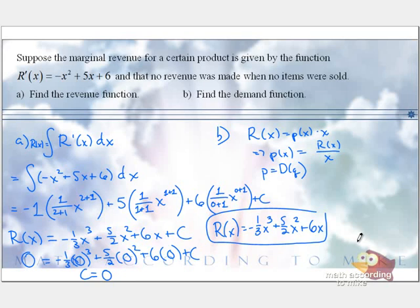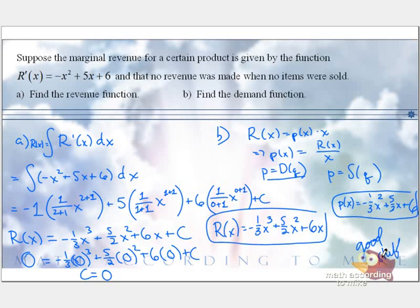So if we do revenue divided by number sold, that gives you the price, which is demand. That's what I meant to say. So you've seen this formula before. We've also had price was supply. So if you took your revenue function and divided by x, to divide each of these by x, what would you get? Negative ⅓x². It is good stuff, Penn. Good job for writing that.